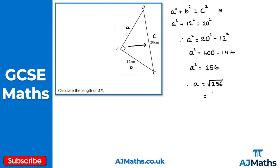So a is equal to 16 — we're working in centimeters, so we get 16 centimeters. In other words, the length of ab is equal to 16 centimeters. And there we have it — that's the solution to question two, and that's going to be the end of this video on an introduction to Pythagoras. In the next video, we're going to take a look at exam revision for Pythagoras.